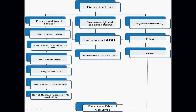Additionally, decreased aortic stretch causes vasoconstriction, reducing renal perfusion and blood flow to the kidney, which stimulates the renin-angiotensin-aldosterone system. Activated aldosterone promotes sodium reabsorption, which draws water with it, restoring blood volume. These compensatory mechanisms work when dehydration is short-term and manageable. However, if dehydration is severe, progressive, or continuous beyond the body's compensatory capacity, it leads to decreased intravascular volume — hypovolemia — reduced venous return, decreased cardiac output, and falling mean arterial blood pressure, ultimately reducing tissue perfusion and oxygen delivery to cells.